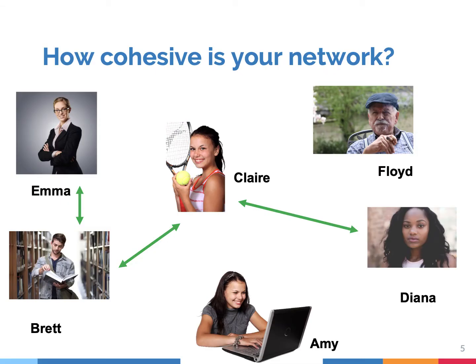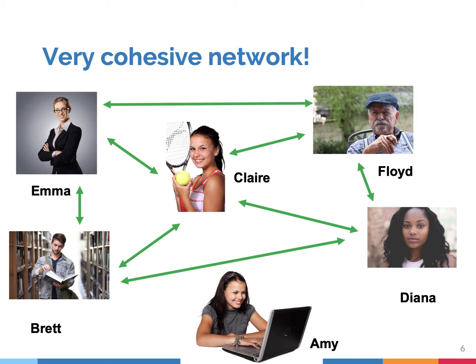So what sociologists like to know is how well your social ties are connected to each other. Does Diana hang out with Claire, for example? And do Claire and Brad know each other? And are Brad and Emma connected? The reason sociologists want to know this is because it tells us something about how cohesive your personal network is. A very cohesive network is one in which many of your connections know each other, and such cohesive networks can generate strong solidarity, trust, and norm enforcement, as we will see.